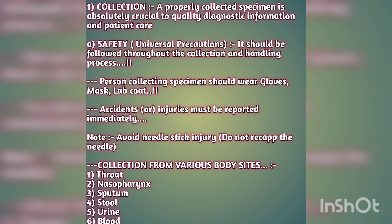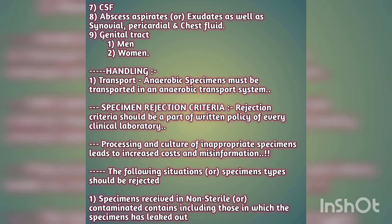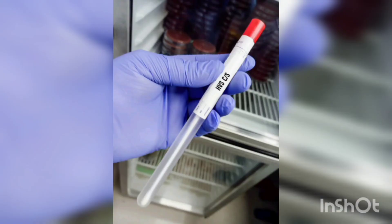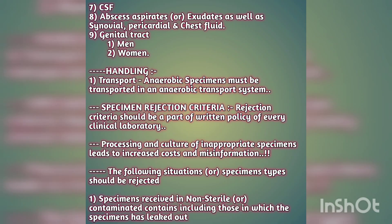Next is collection from various body sites. The different sites from which we collect samples include: throat, nasopharynx, sputum, stool, urine, blood, CSF (cerebrospinal fluid), abscesses, aspirates or exudates, as well as synovial, pericardial, and chest fluid. Genital tract collection is from both men and women — including urethral swab, high vaginal swabs, and pap smears.